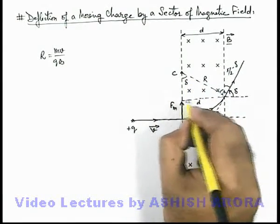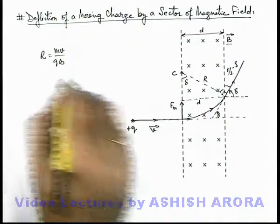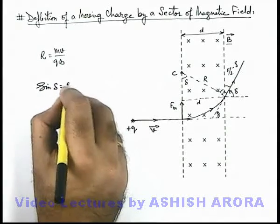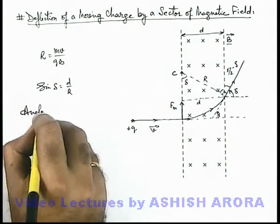As the sector width is d, here we can write in this triangle: sine delta we can write as d by r. So here angle of deviation.